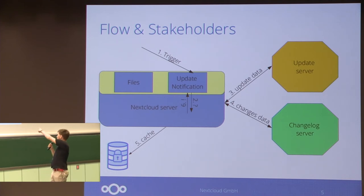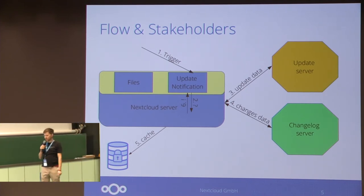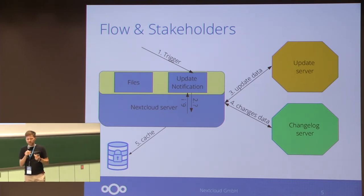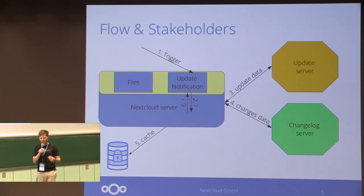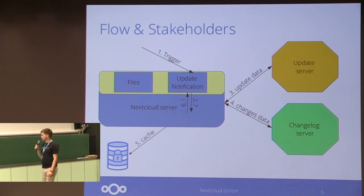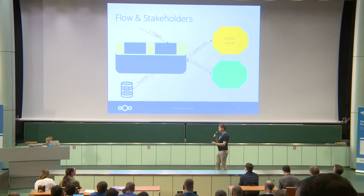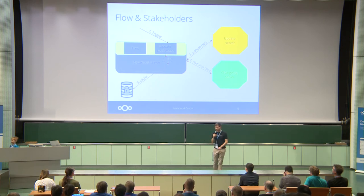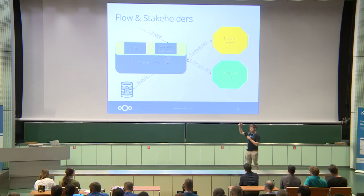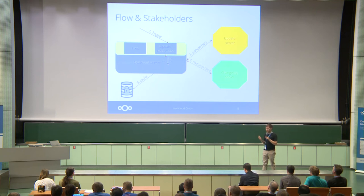The Nextcloud server again reaches out to the changelog server, and there it gets the bullet points — not only those that you've seen, but also three additional ones with content targeted to administrators who see it in the admin pages for the server overview. This is cached and then presented back to the update notification, and you see it in the UI. Admins now see a small 'What's New' link, and if they click on it, this information pops up, plus three additional items for administrators so they know what to consider when upgrading.